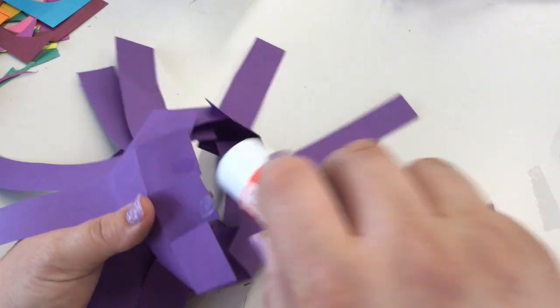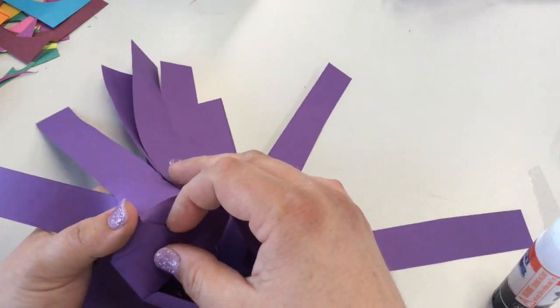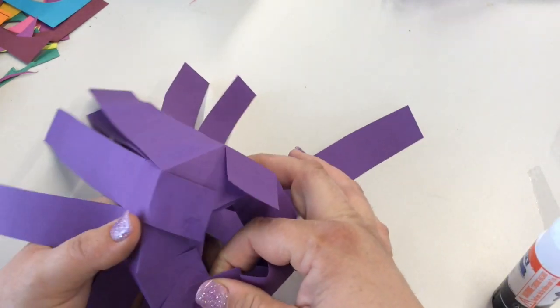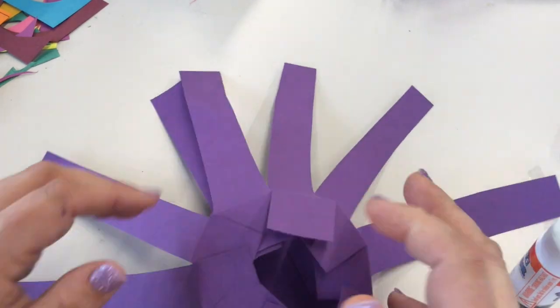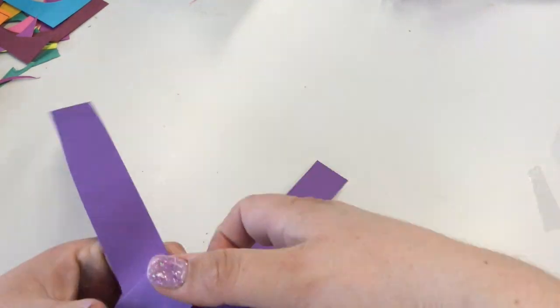They'll overlap, and notice it's just a dab of glue in the corner, but make sure you have plenty there. We want our vase to be secure. Repeat this through all of the tabs until you've completed the circle.